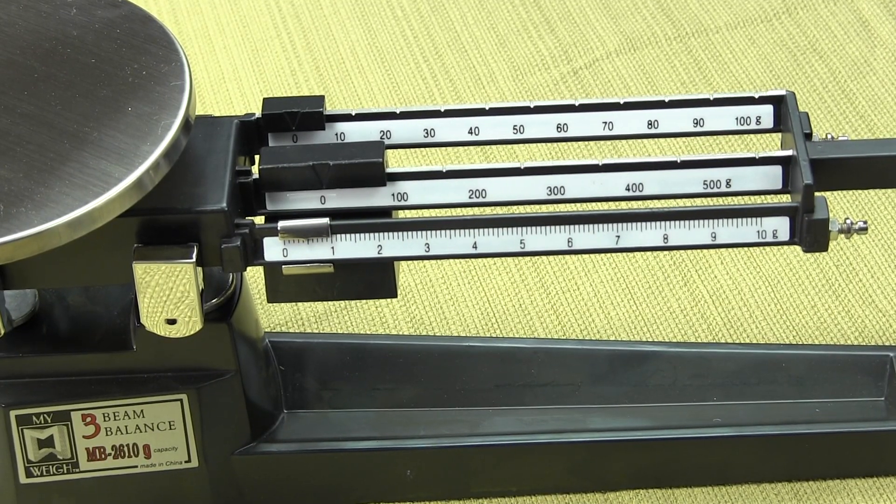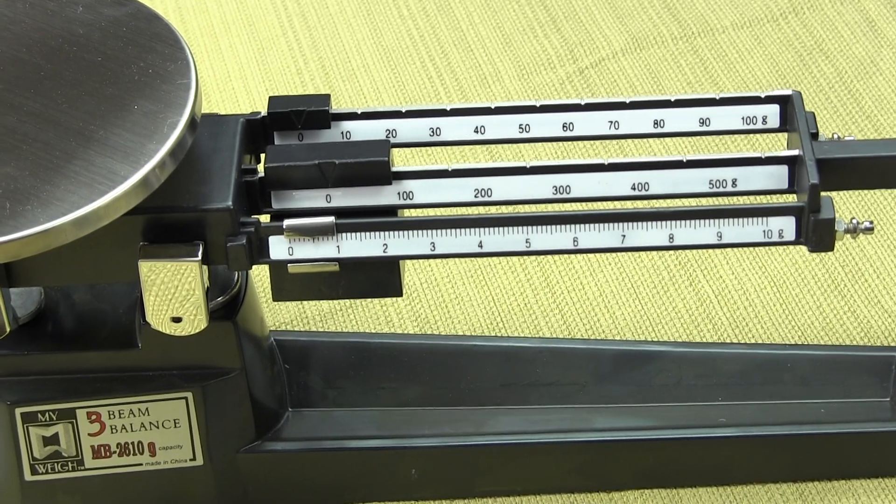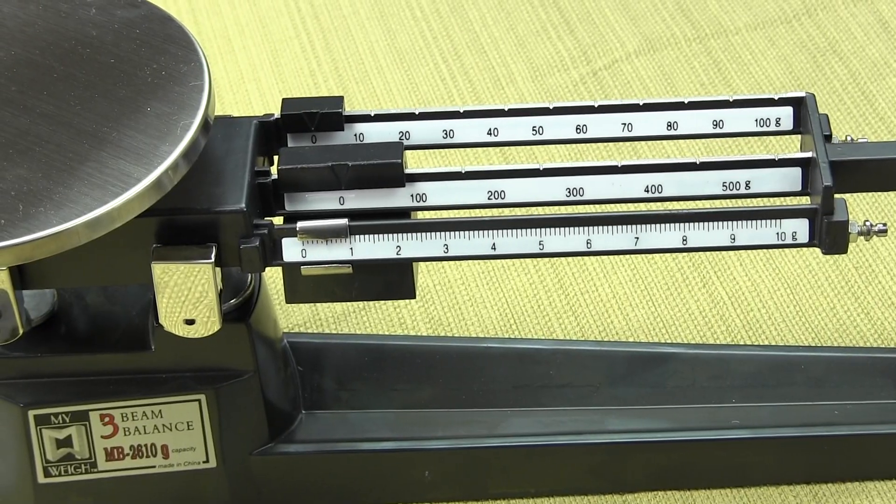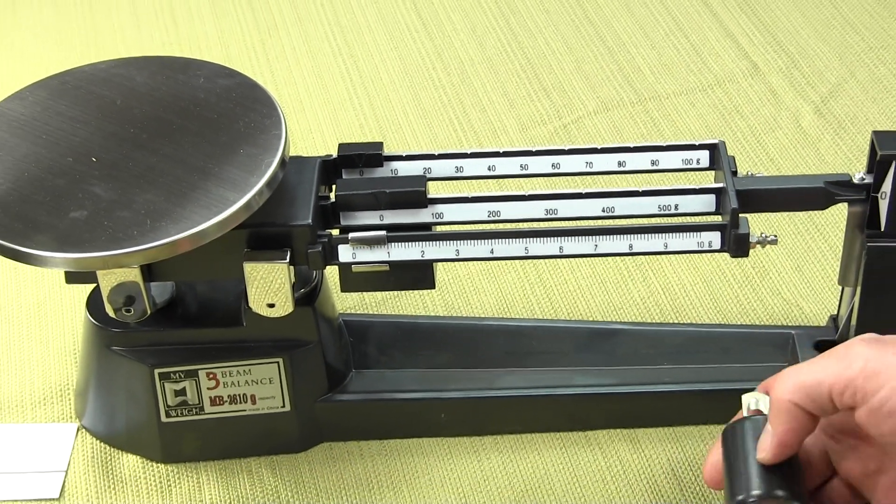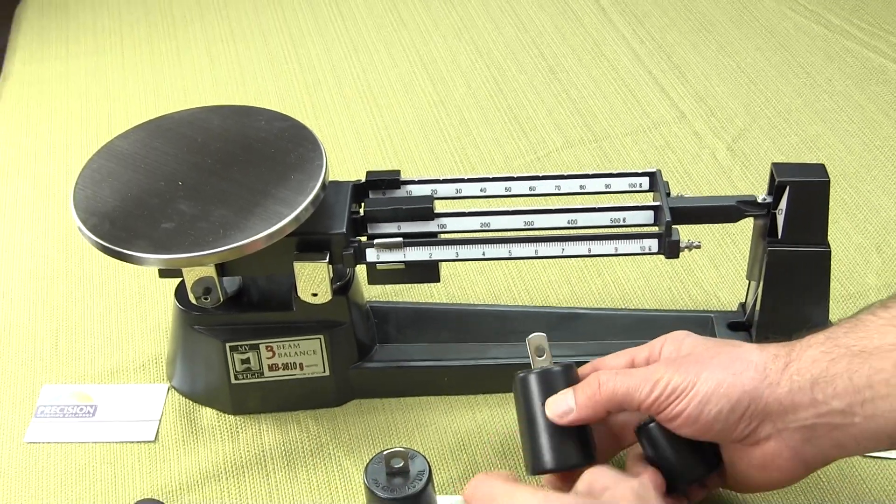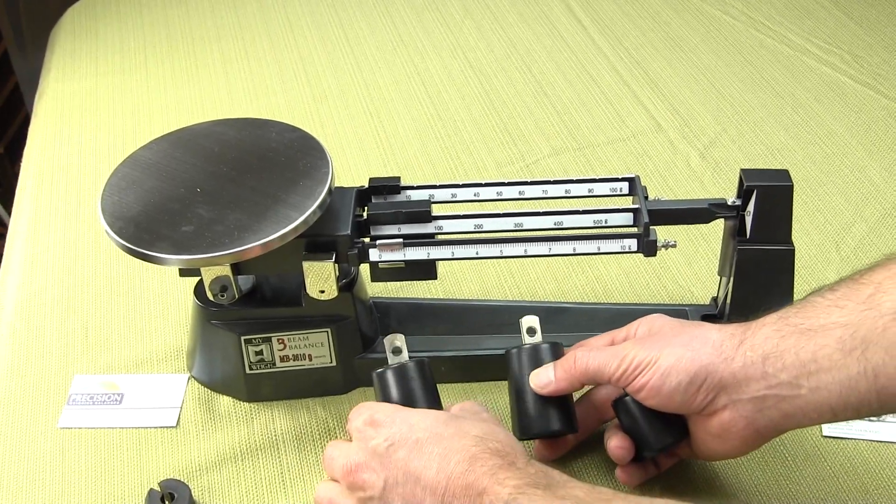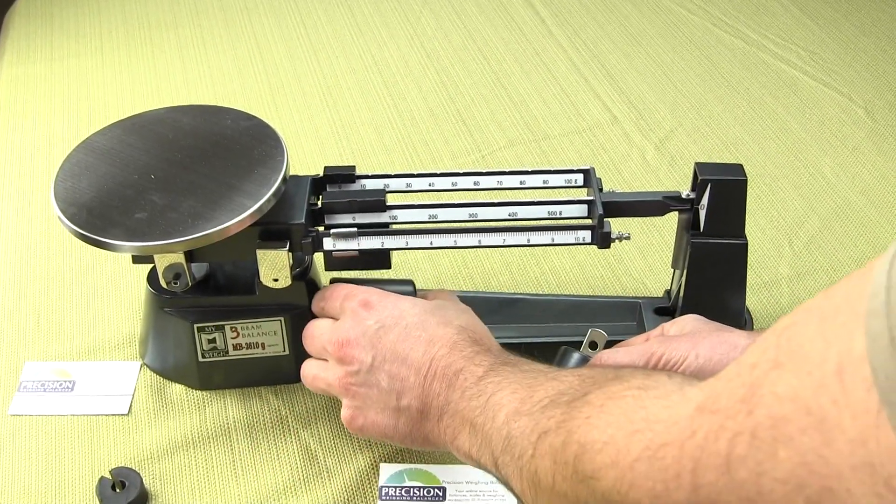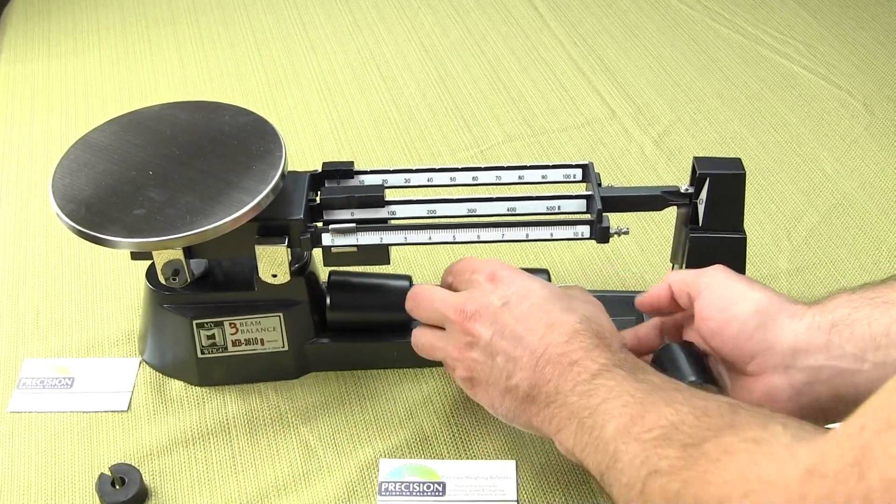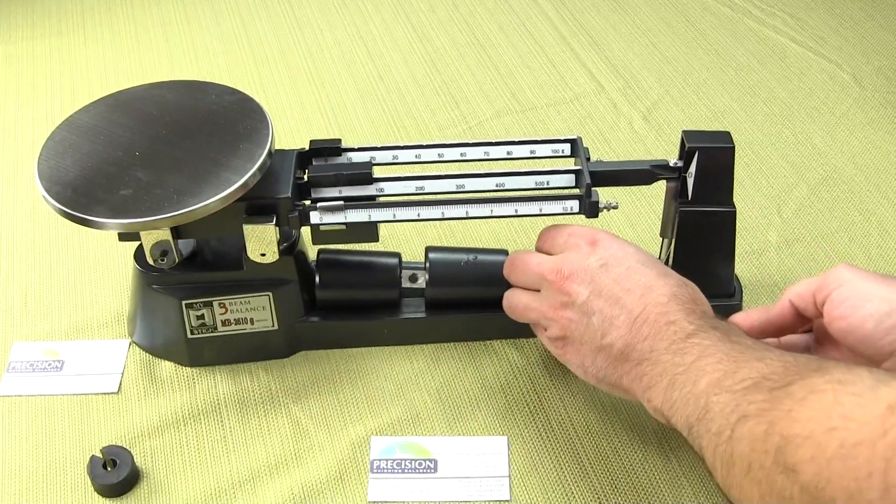The base is a cast metal base. The three beam balance, unlike competitive brands on the market, comes standard with three attachment weights. These attachment weights, one would store them right underneath here, right in this little tray.